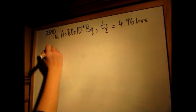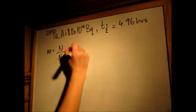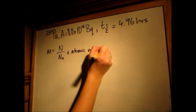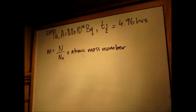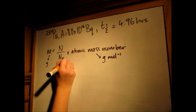Finally, we find the mass, which is number of atoms over atoms per mole, times atomic mass number, which is grams per mole. You can see how all of these units cancel out to give just grams.